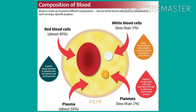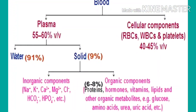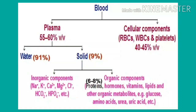Plasma is a straw-colored viscous fluid forming the matrix of the blood. It is a ground substance, meaning a water matrix. Matrix is the ground substance of a tissue or a non-living substance occupying the space between cells. In terms of composition, 90 to 92% of plasma is water.